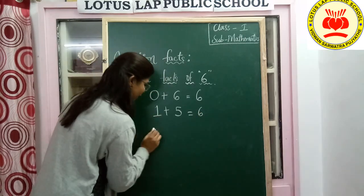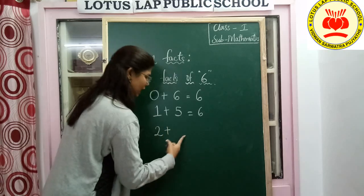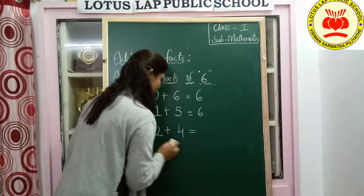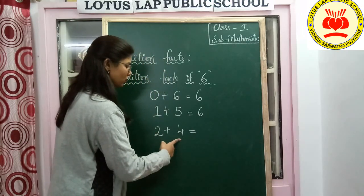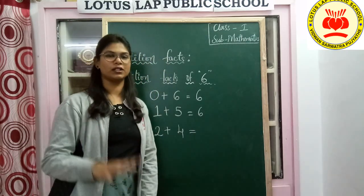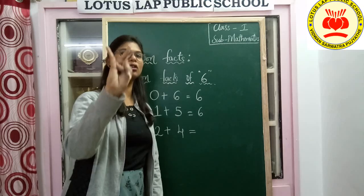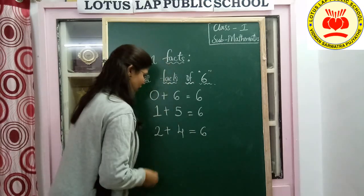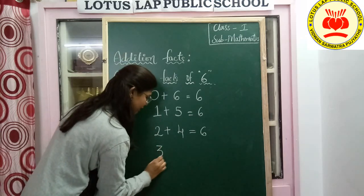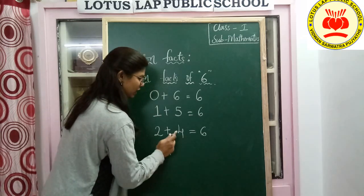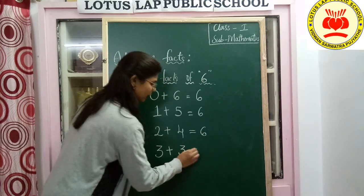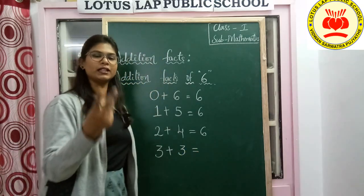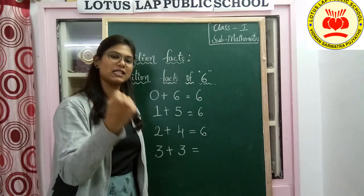Now, 1's after number is 2. 5's before number is 4. So 2 plus 4. 2 after — 3, 4, 5, 6. Now 2 is finished. Let's check with 3. 4's before number is 3. 3 plus 3. 3 after — 4, 5, 6.